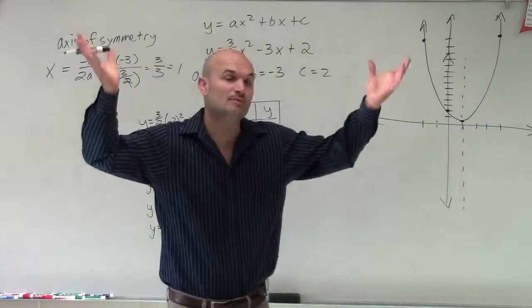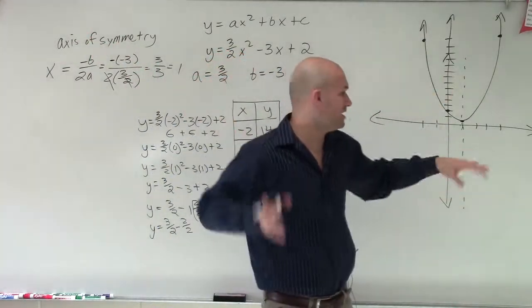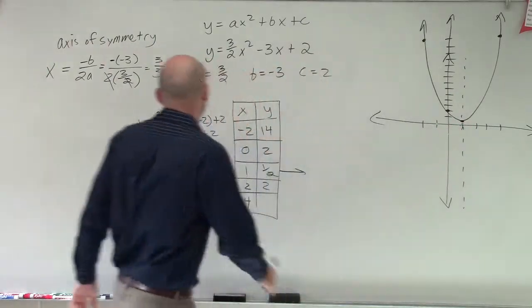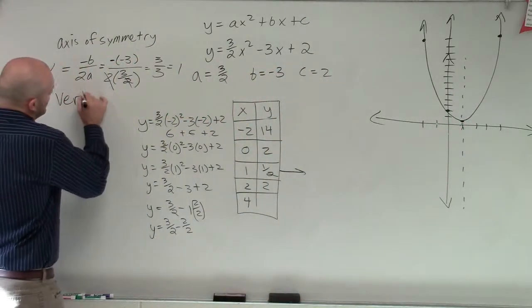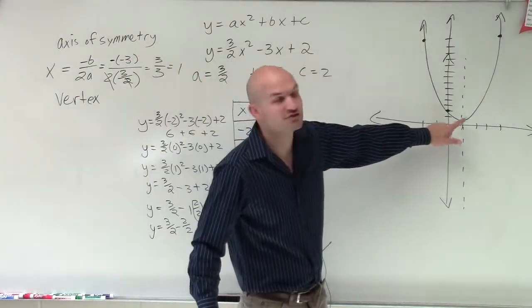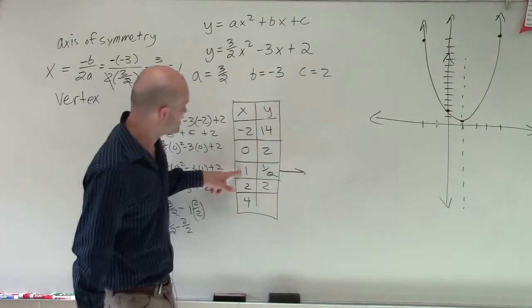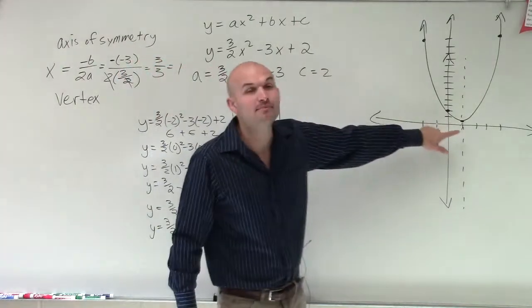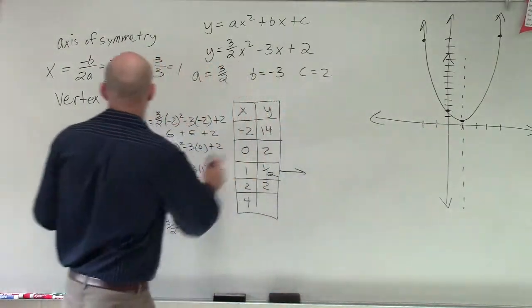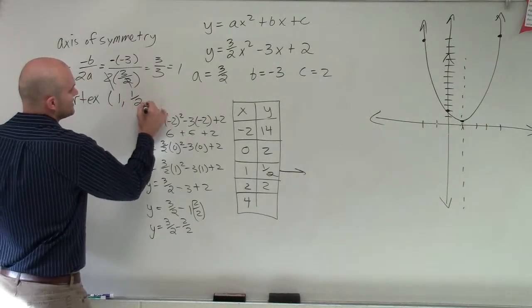All right, so the graph is going to continually be going up there. My a is positive, so it's going to be opening up. And I'm going to have a minimum point, which is my vertex. Now, remember I said we had to go and find our x value. We had to go and use our axis of symmetry to find the vertex. Because now once we've plugged in our x value for our vertex, which is 1, I now have my y coordinate, which is 1 half. And that's going to be my vertex, which in this case is the minimum point.